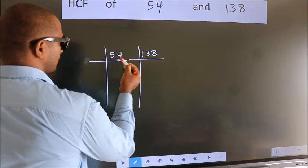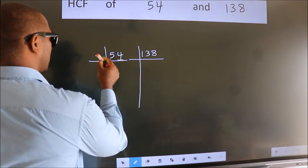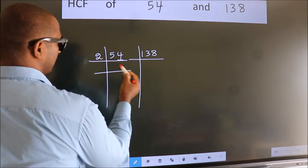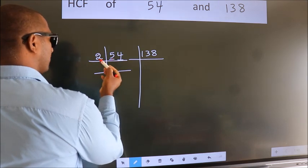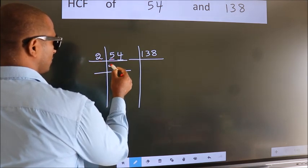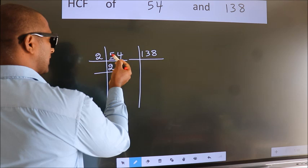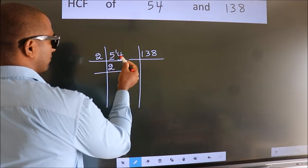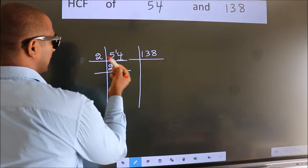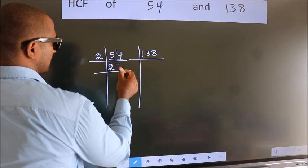Last digit is 4, even. So take 2. First number 5. A number close to 5 in 2 table is 2 times 2 is 4. 5 minus 4, 1. One carried forward, 14. When do we get 14 in 2 table? 2 times 7 is 14.